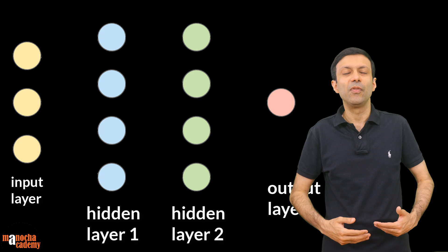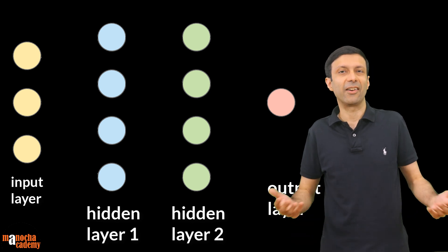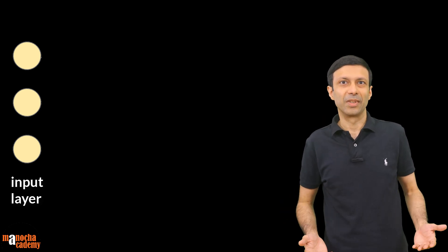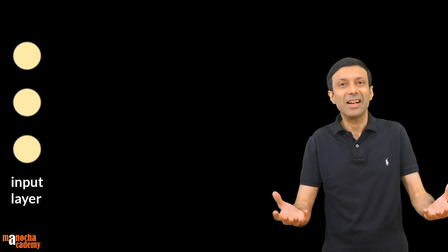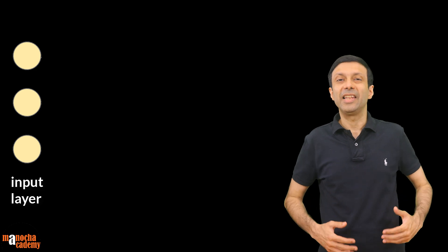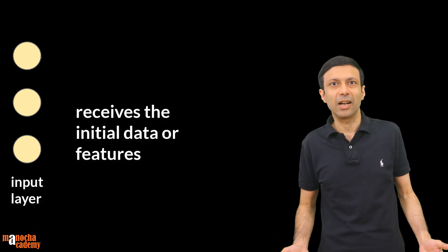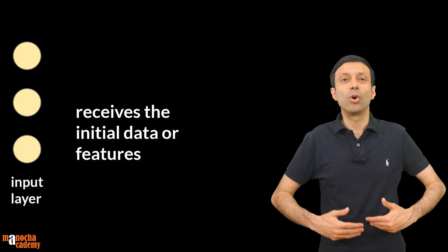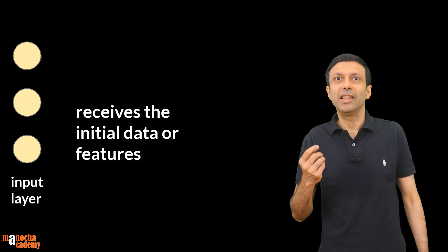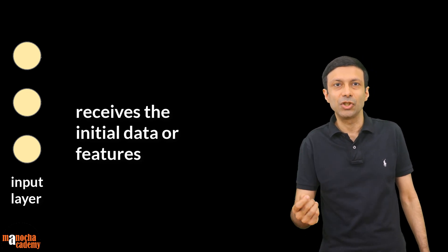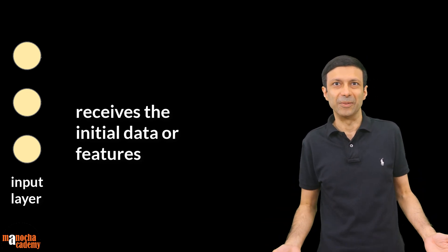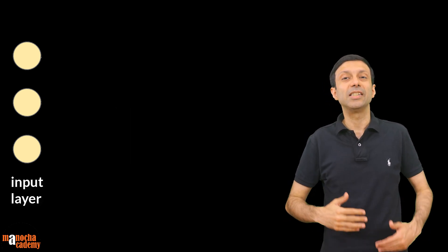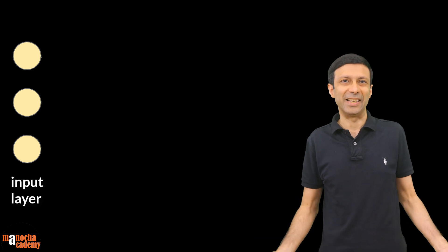For simplicity we will show a few nodes in the diagram here. The input layer is the first layer of the network and its job is to take the data as the input. The input layer receives the initial data or features that are fed into the network. For example, let's say you want to take the data of a person — the features could be things like age, height, and weight of the person. Each neuron or node in the input layer represents a feature or attribute of the input data.